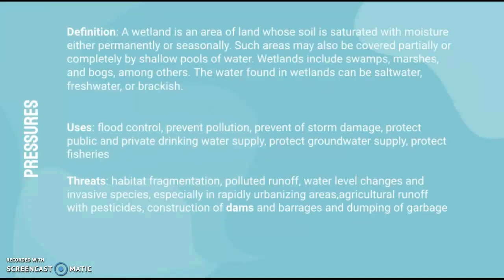A wetland is an area of land whose soil is saturated with moisture, either permanently or seasonally. Such areas may also be covered partially or completely by shallow pools of water. Wetlands include swamps, marshes, and bogs, among others. The water found in wetlands can be saltwater, freshwater, or brackish.